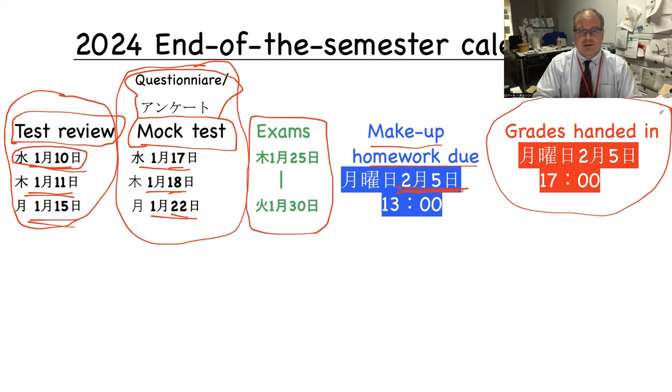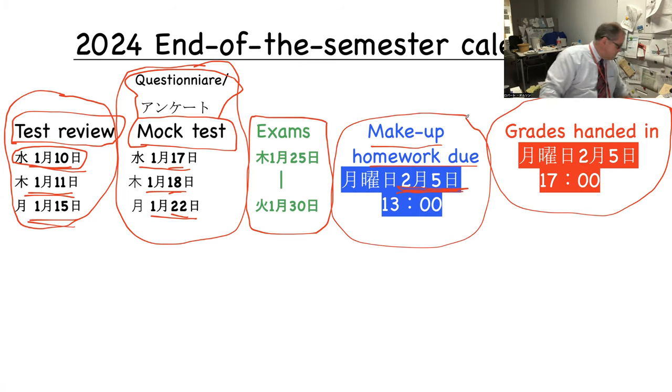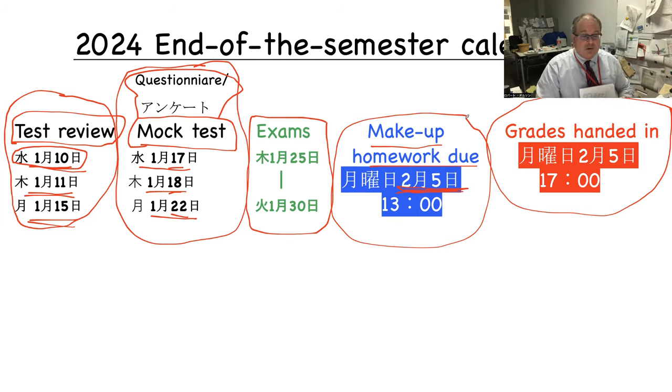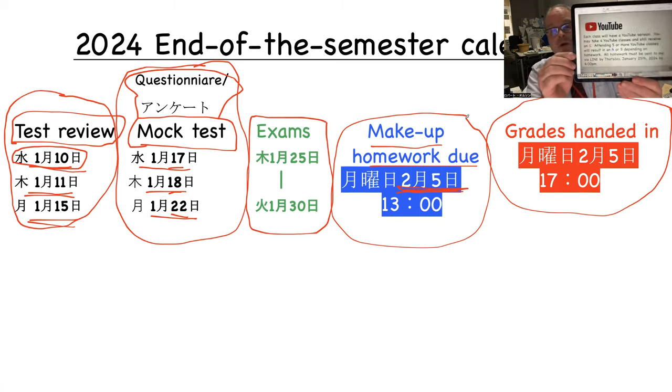So please do that now. Makeup - what does this mean, the makeup homework? Check the back of your folder. Like for example, if you look at your folder, like right here, this folder, these are the days that you missed. I said before if you missed four classes, you can make up to four classes.